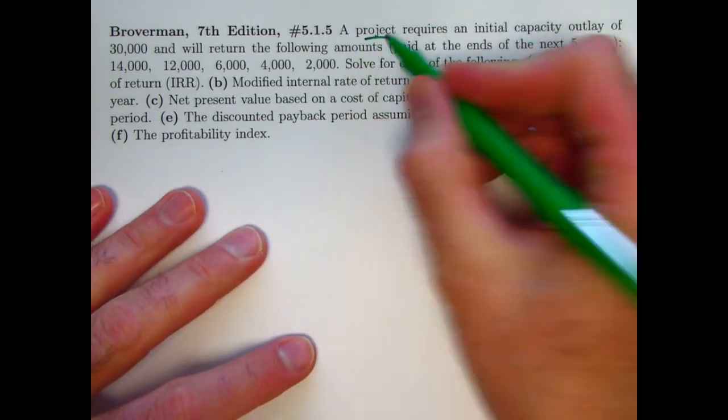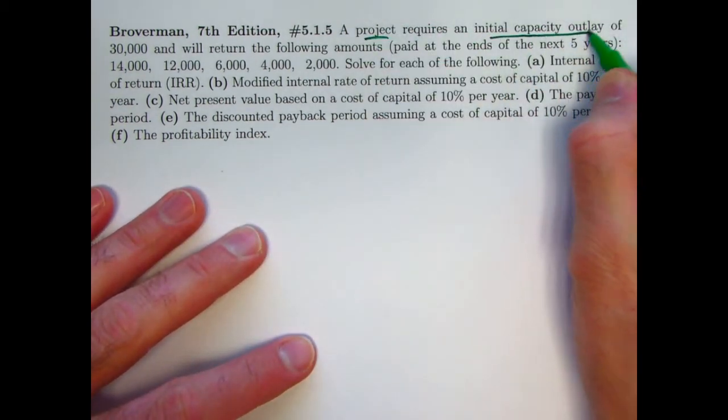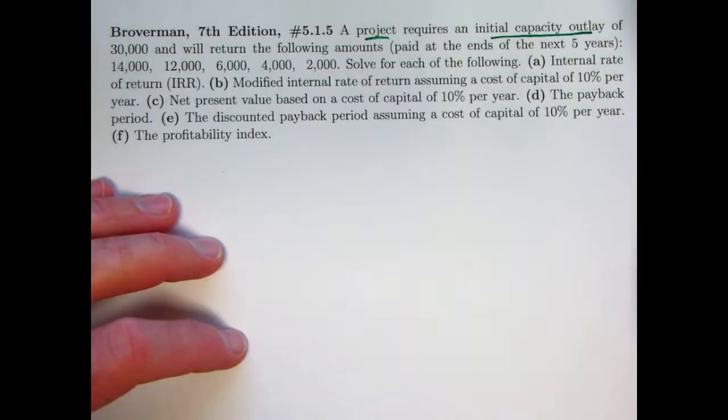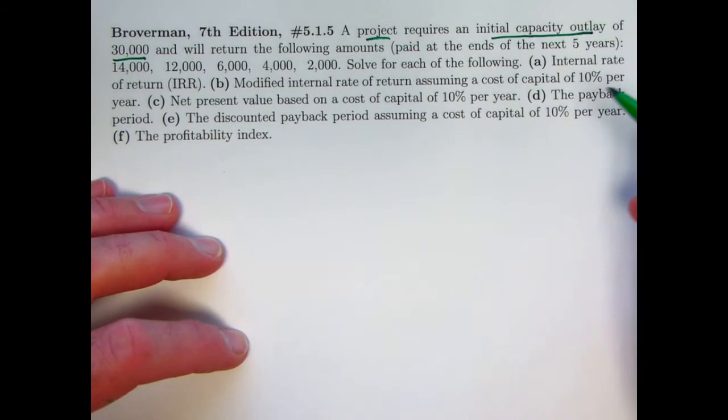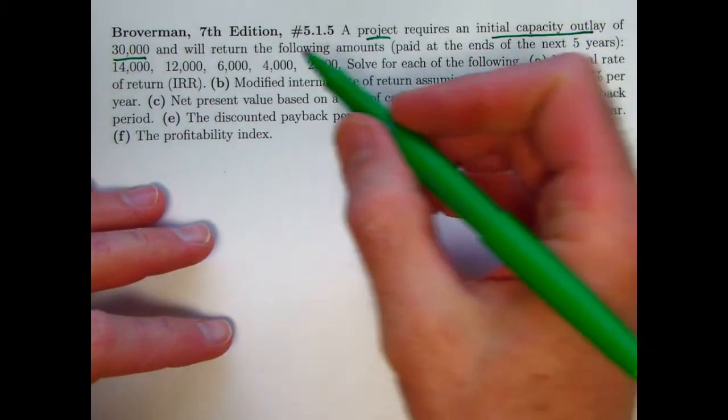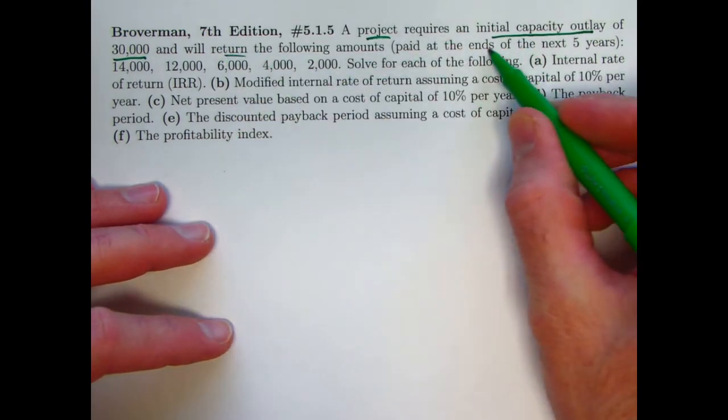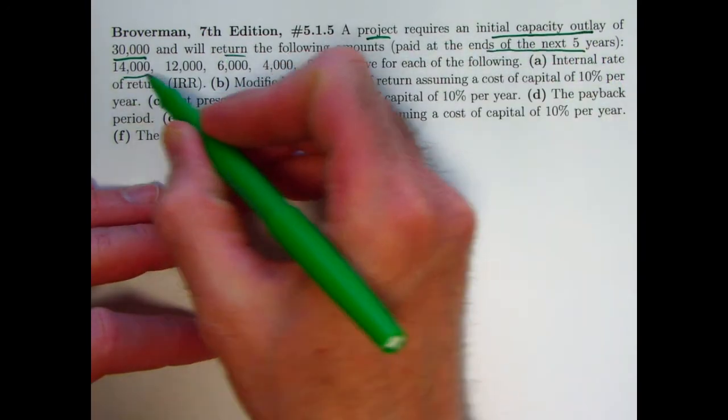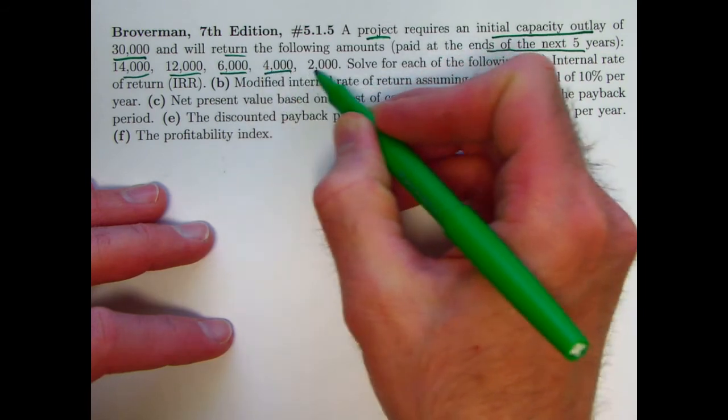You've got a project that requires an initial capacity outlay, an investment of $30,000, which I will, by the way, write as $30,000. All the amounts are going to be in thousands to keep things shorter. And it's going to return the following amounts paid at the ends of the next five years, $14,000, $12,000, $6,000, $4,000, $2,000.